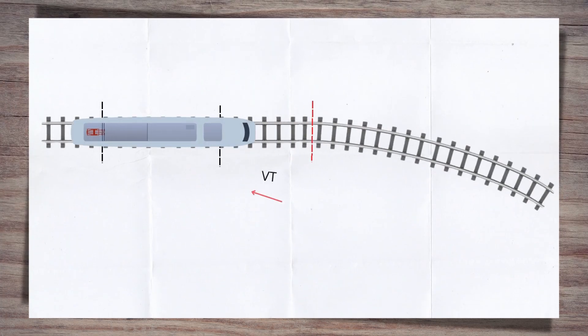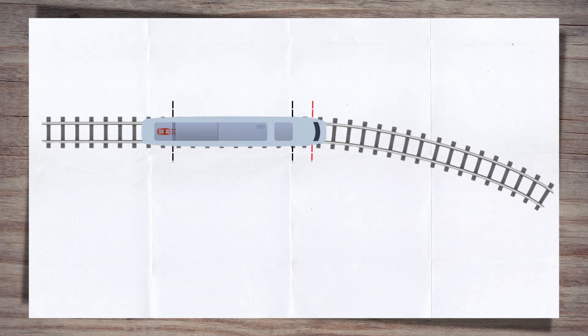In effect, this means that the train starts to be subjected to change when the first bogey passes over the VT, with any changes in forces happening.